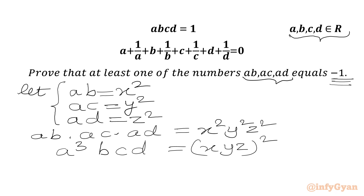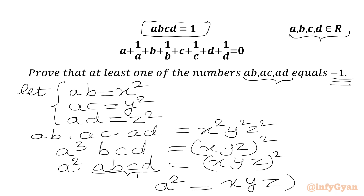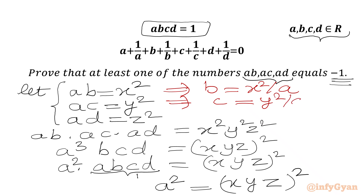We can write A³ as A² × A, then times BCD = (xyz)². Since ABCD = 1, we substitute to get A² = (xyz)². So A² equals (xyz)².